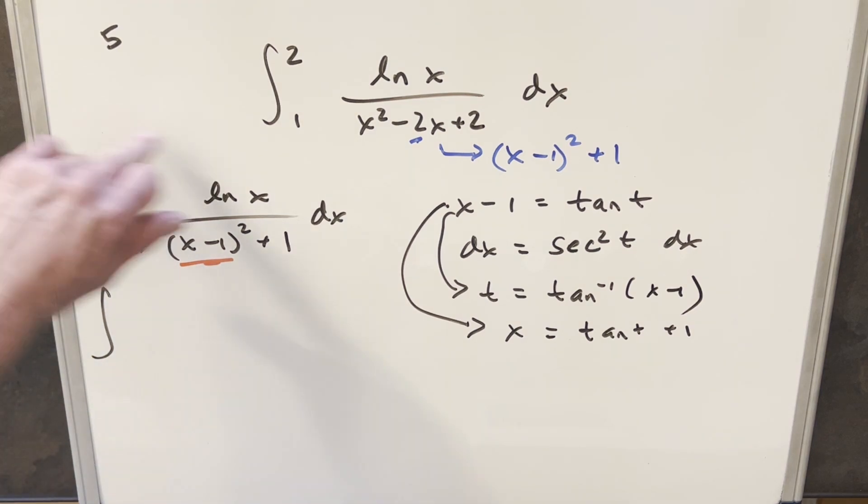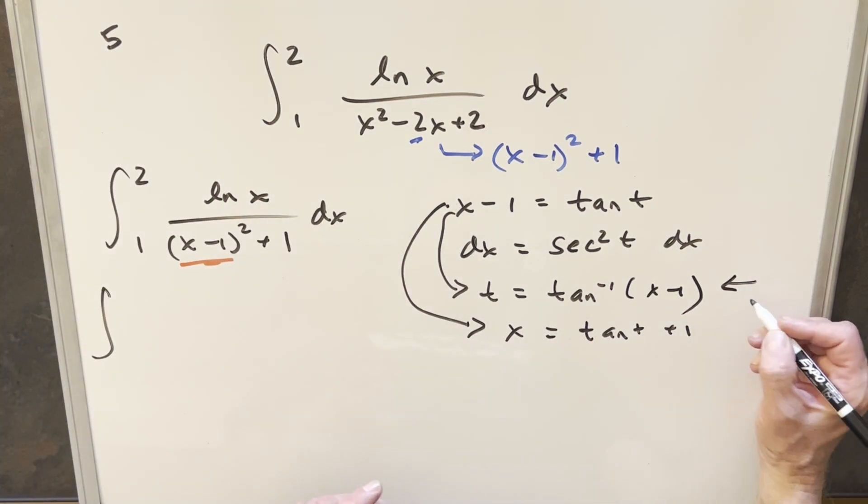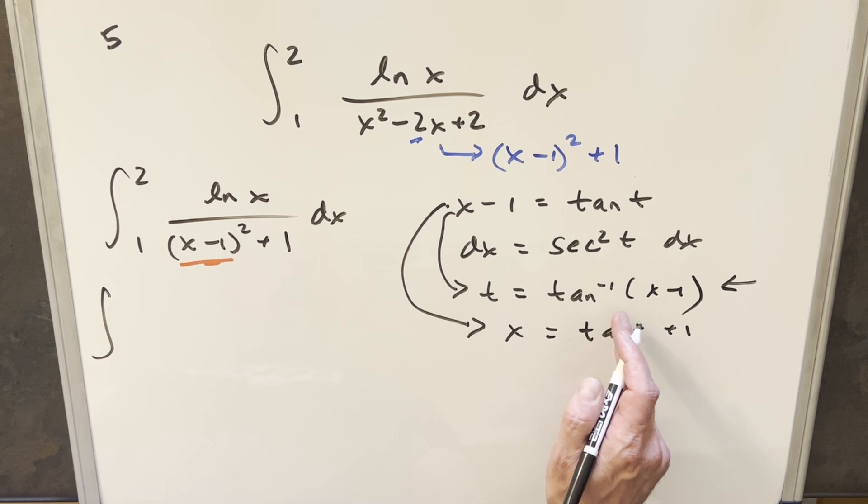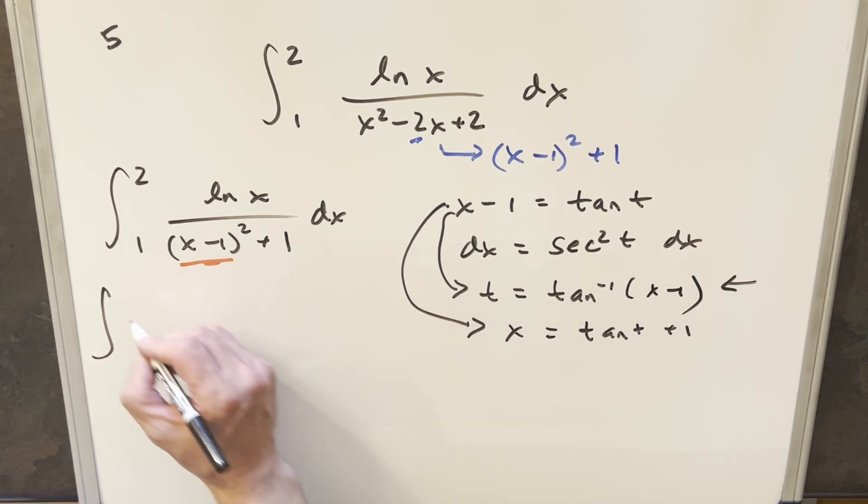So then let's come over here and go ahead with this. First, updating our bounds, take a 2 and plug it into this one right here. 2 minus 1 is 1. Arctan at 1 is just going to be pi over 4 here. Then plug in 1, arctan at 0, that's just 0.